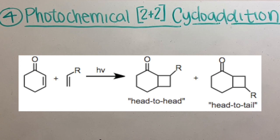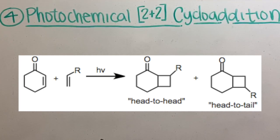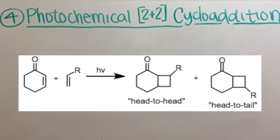The fourth transformation is the 2 plus 2 photocyclo addition, which is similar to the Diels-Alder reaction.